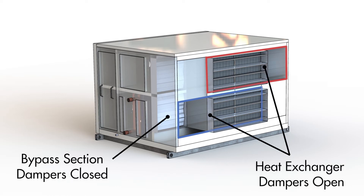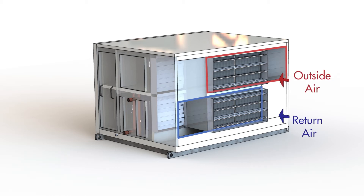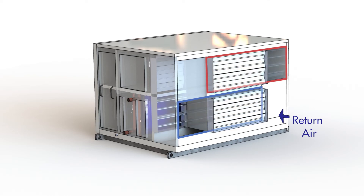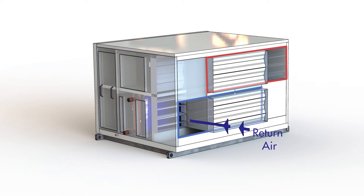In heat or energy recovery mode, the heat exchanger dampers are open, while the bypass section dampers are closed. This forces the outside air and the return air from the space to pass through the air-to-air heat exchanger. But in scenarios where there is no outside air required, the heat exchanger dampers close and the return air bypass dampers open. This forces the return air to bypass the air-to-air heat exchanger and flow back into the indoor space.